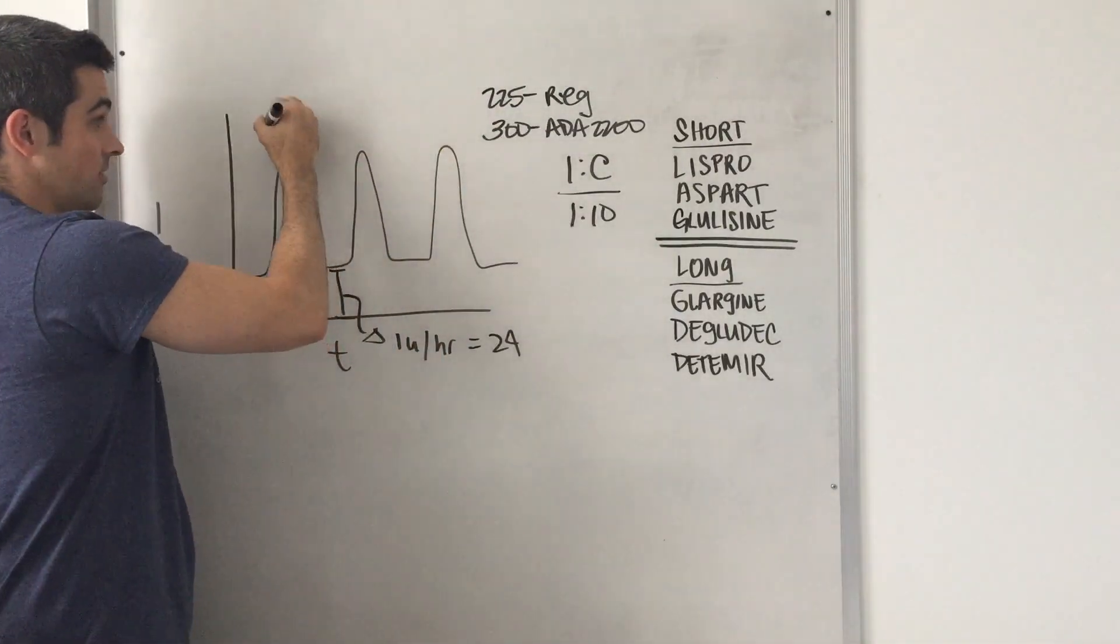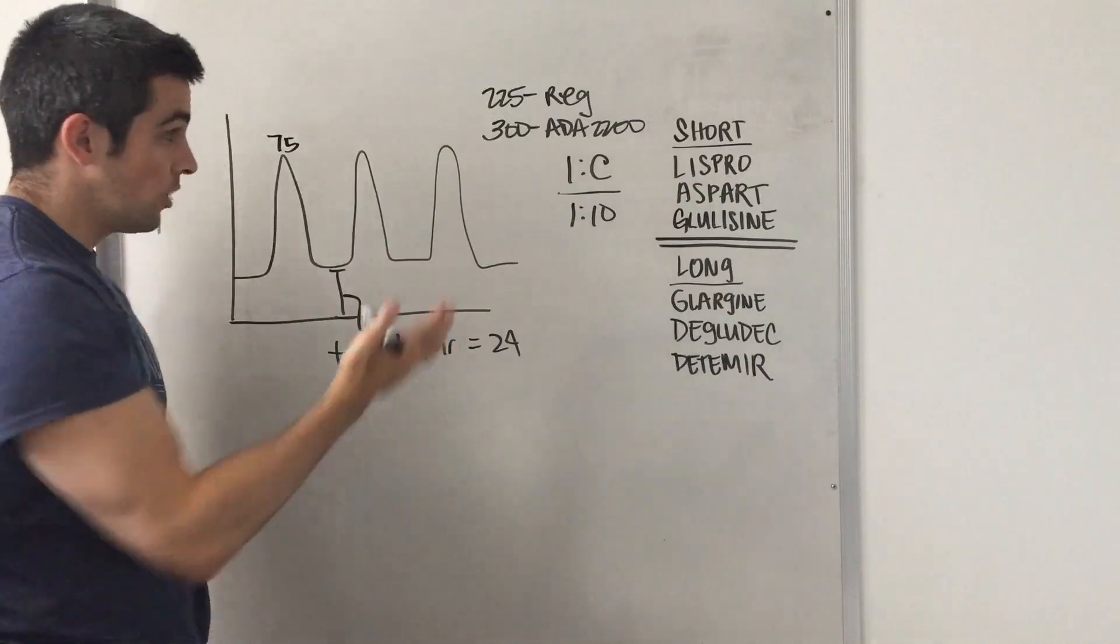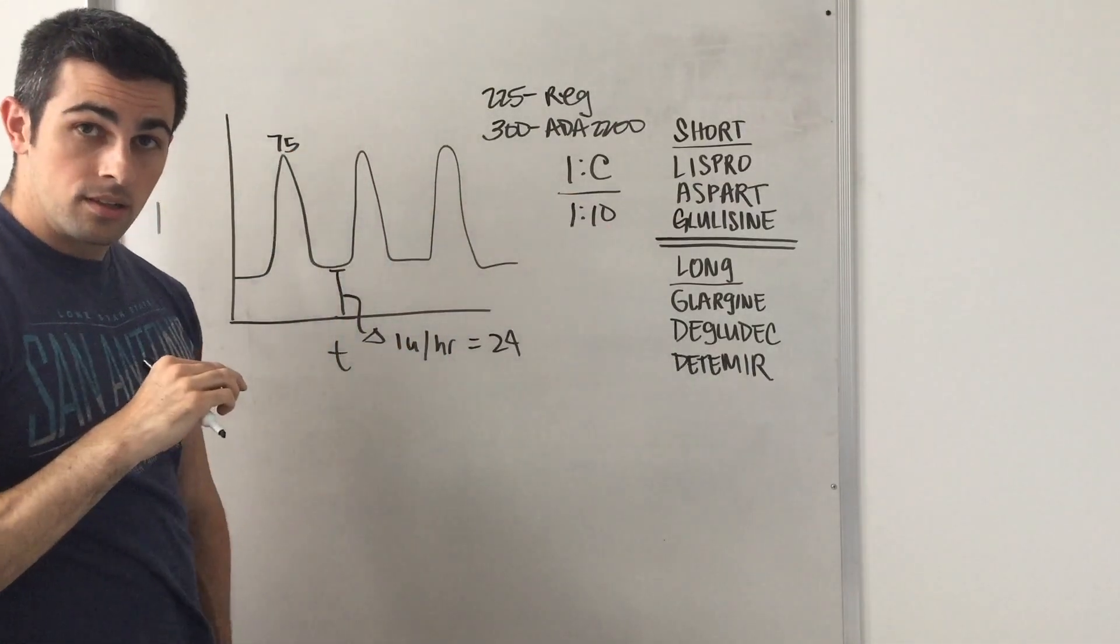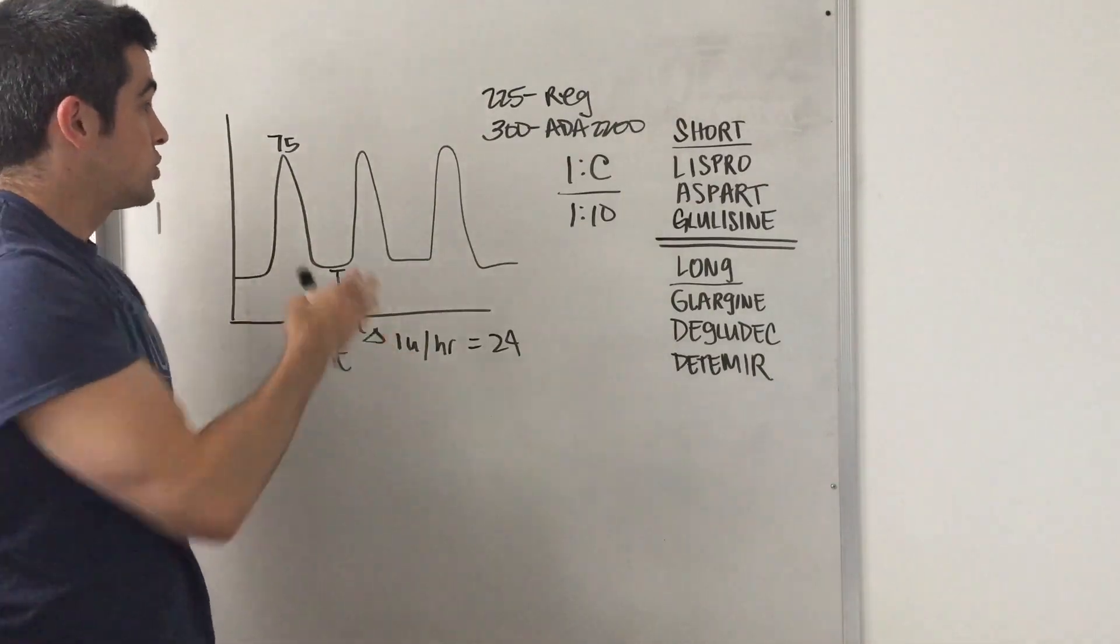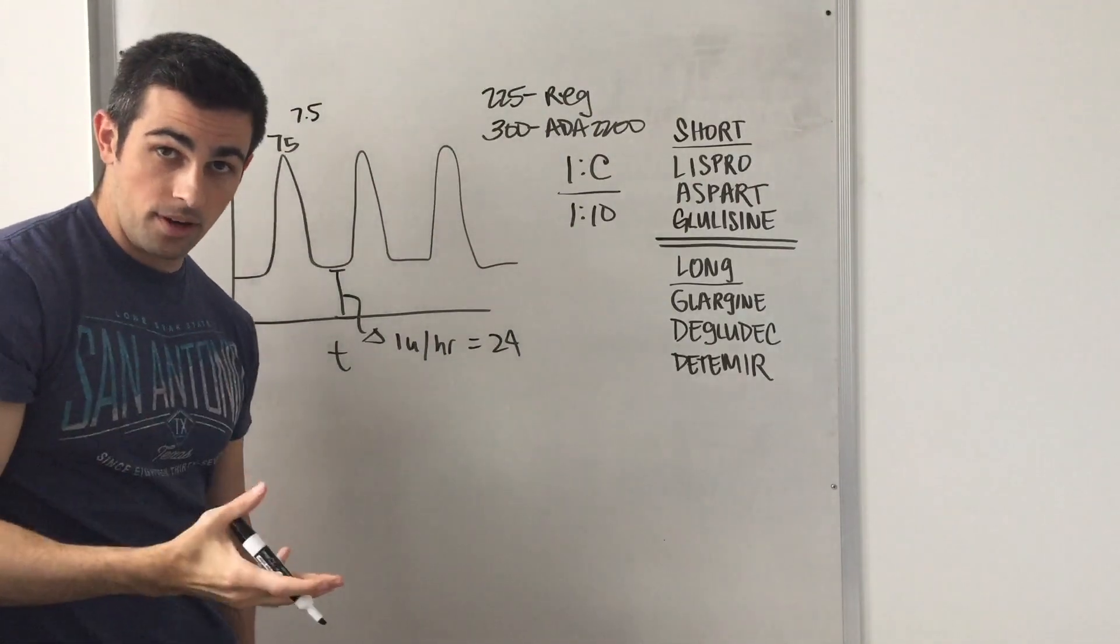Now how much insulin are you going to want to give short-acting after or for each meal? Each meal is going to be 75, right? So 1 to 10, and they're doing 75 carbs.